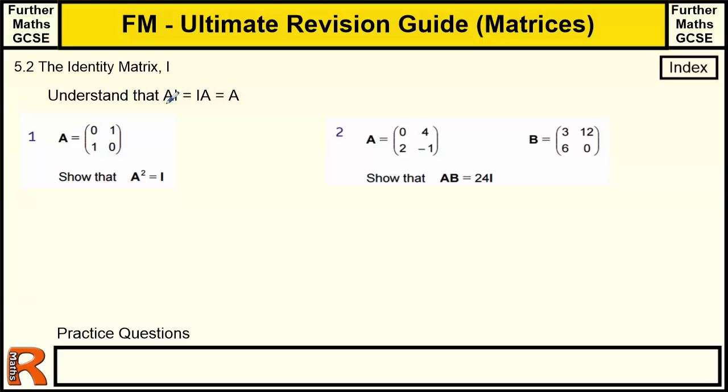Basically we've got to understand that any matrix times by the identity matrix is the same as the identity matrix times that matrix. So in that sense it's commutative. Multiplication of matrices is generally not commutative, but when you multiply by the identity matrix you end up just with the same matrix.